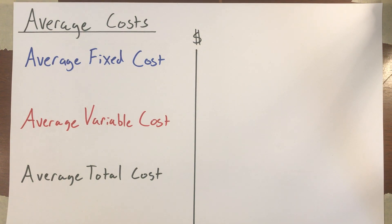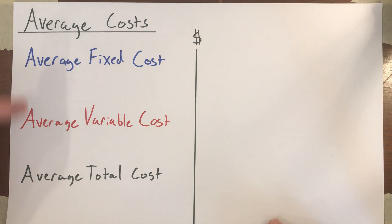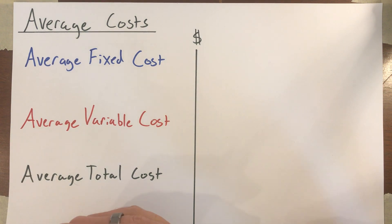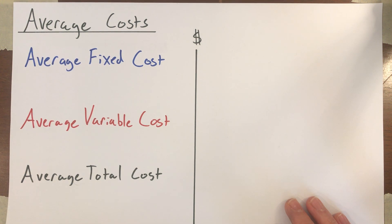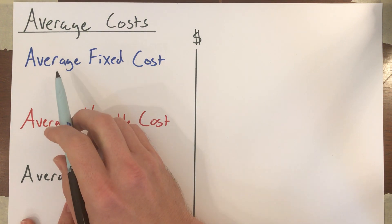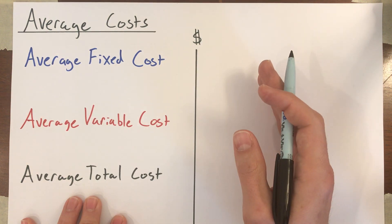In this video, we're going to talk about average costs. This is a little bit of a digression, but it's going to be important to understand these graphs and understand these average cost concepts for thinking about when firms should enter a market, when they should exit the market. There are three different types of average costs that we're interested in: average fixed, average variable, and average total. Since they're averages, that just means we're dividing by the quantity of units.